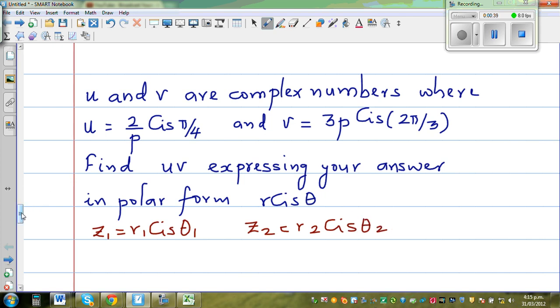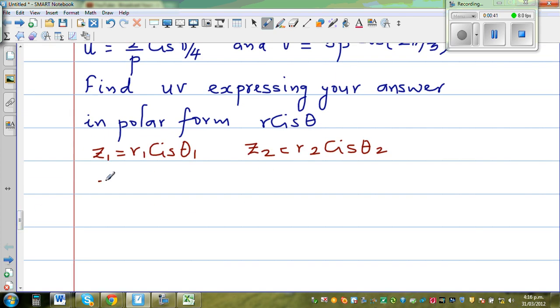Now this rule applies when this is in polar form. So the rule is z1 times z2 equals r1 times r2 cis (θ1 + θ2). I have made a video on this proof, it's a simple proof that uses compound angle formula for sine and cos.